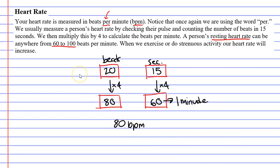In fact, people who are elite athletes can have a resting heart rate as low as 40 beats per minute. Whenever we exercise or do any strenuous activity, that's when we notice our heart rate increasing and going above our resting heart rate — we can feel our heart beating much faster when we do these things.